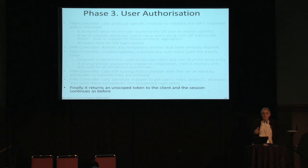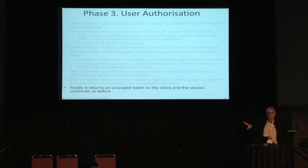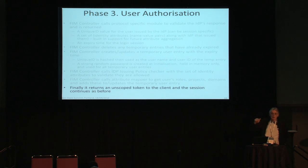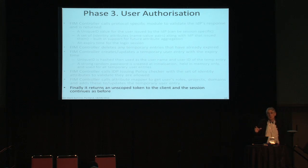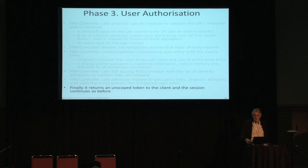An unscoped token is a token not scoped to a specific service. Keystone initially returns an unscoped token; you then choose your project and get a scoped token. That's the standard Keystone design.